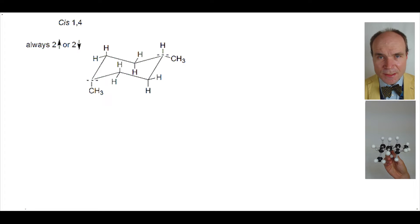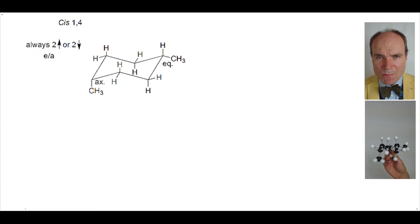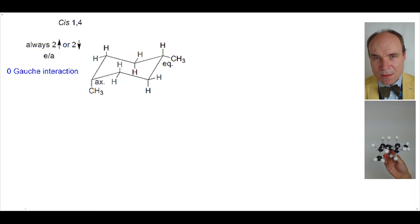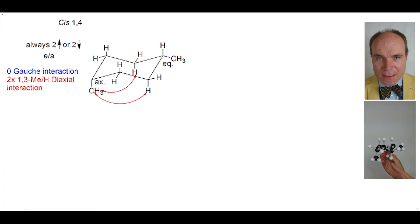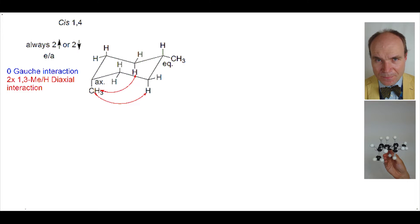This chair conformation has a methyl group in an equatorial position and a methyl group in an axial position. When we look to determine any steric strain being present, we find no gauche interactions, but there are two 1,3-diaxial interactions between hydrogen and methyl.